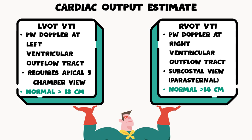The RVOT VTI, on the other hand, places the pulse wave Doppler at the right ventricular outflow tract, and you can perform it in the subcostal view or the parasternal view. Normal for the LVOT VTI is going to be about greater than 18 centimeters, and for the RVOT VTI, normal is going to be about greater than 14 centimeters.